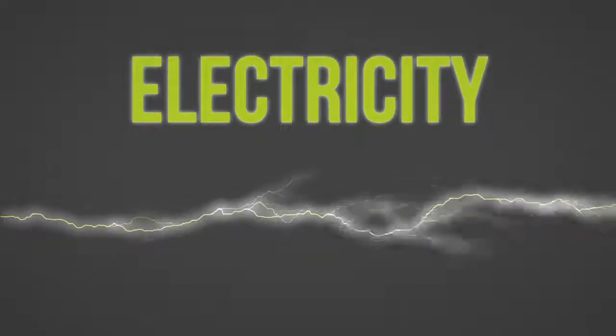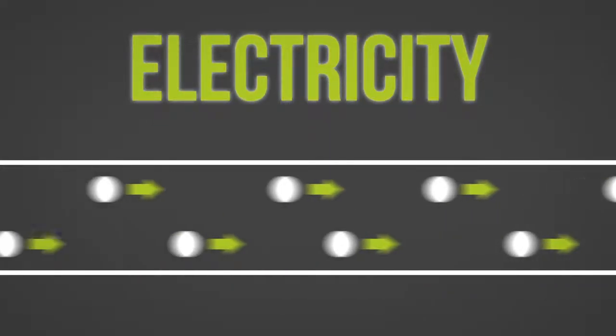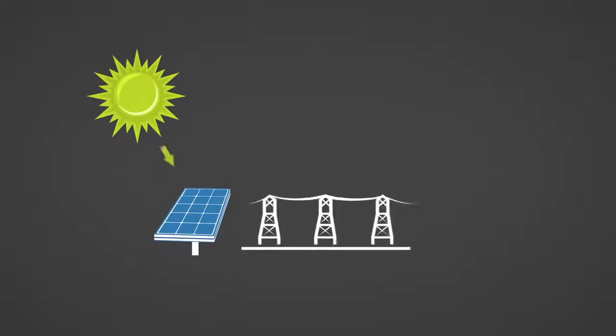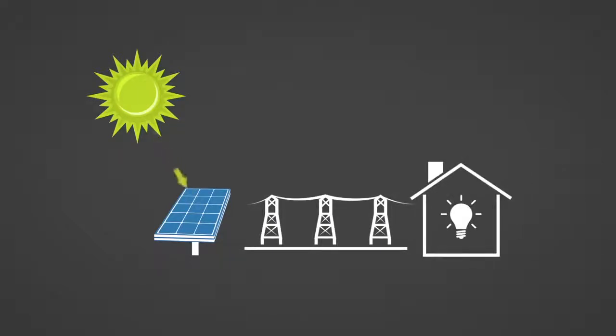Electricity. Electricity is the physical flow of electrons referred to as an electrical current. Electricity is an energy carrier that efficiently delivers the energy found in primary sources to end users who in turn converted into energy services.